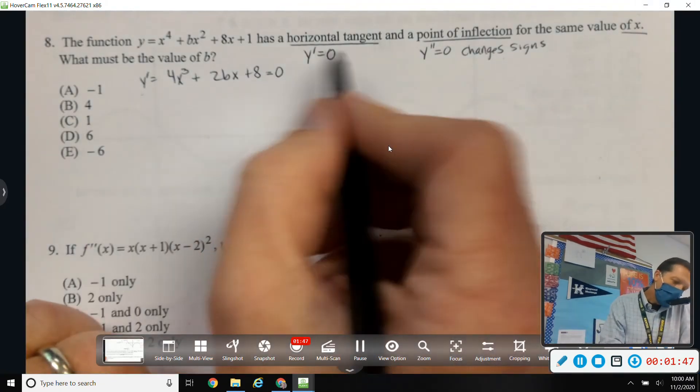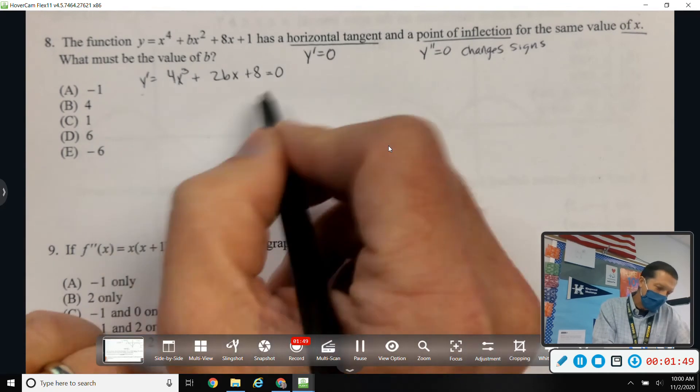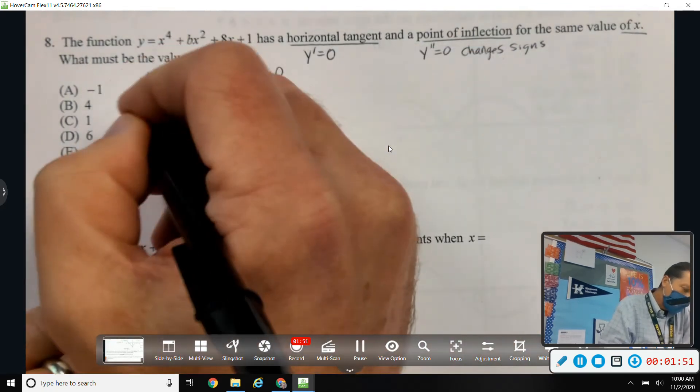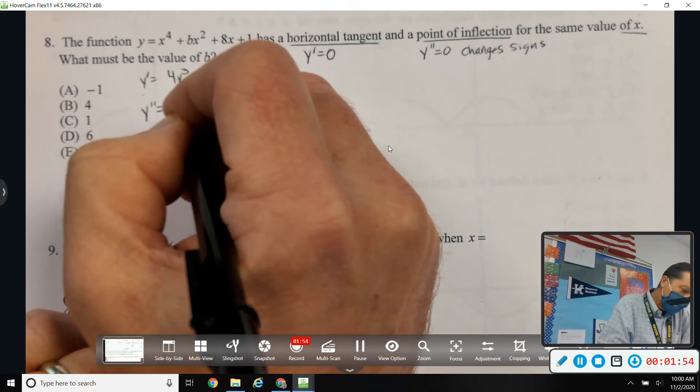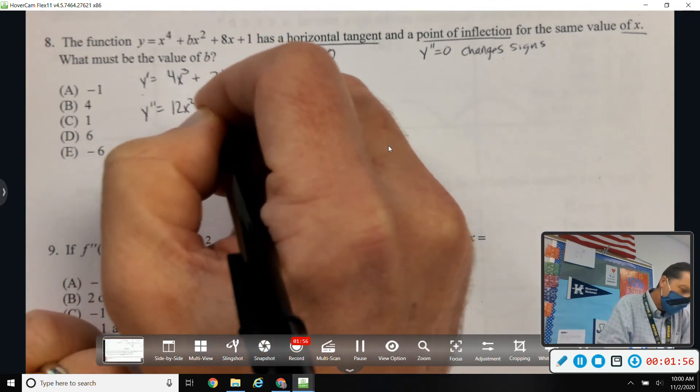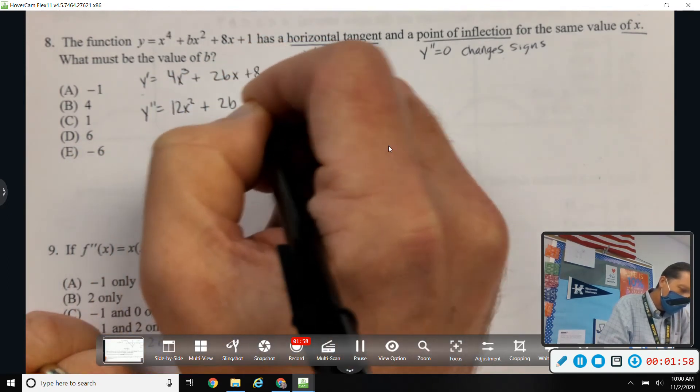So, y prime equals 0. All right, again, not much help there. y double prime equals 0. So, 12x squared plus 2b equals 0.